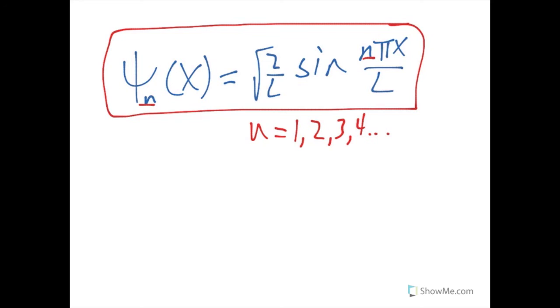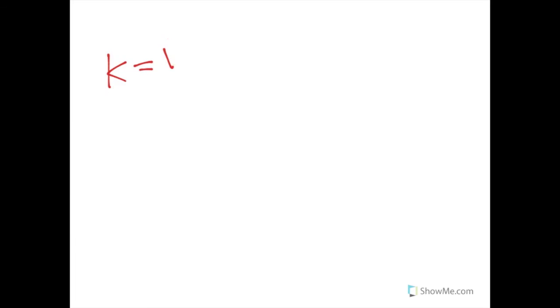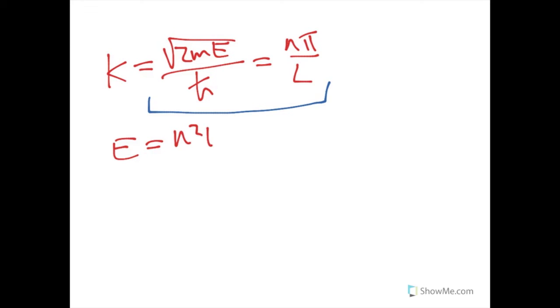Now finally, the last thing we want to do today is find any constants. And we are going to be looking at the energy in this case. So recall k. We defined k at the beginning as root two mE over h bar. And then as we were solving, we also found that k was n pi over L. So we can take these two equations now and solve for E fairly easily to be n squared pi squared h bar squared over 2 mL squared. And actually you'll often see this as n squared h squared over 8 mL squared, where h and h bar have been swapped. That's probably a little more common.